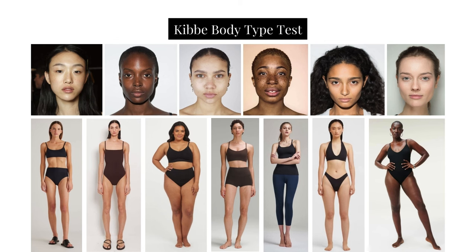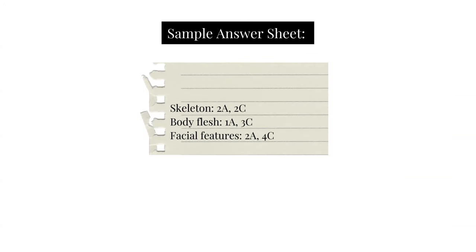This video assumes that you've taken the Kibbe body types test and you've found your type to be Dramatic Classic. If you haven't, you can go a few videos back where I take you through the test and the answers. Otherwise, for Dramatic Classic, your answers should look something like this — mostly C with some A, so mostly blended with some sharpness.